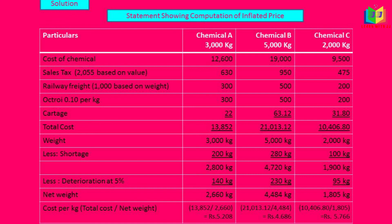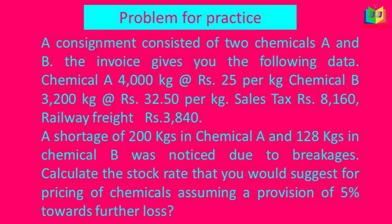Dividing the total cost by the net weight: Chemical A cost per kg = 13,852 / 2,660 = Rs 5.208. Chemical B cost per kg = 21,013.12 / 4,484 = Rs 4.686. Chemical C cost per kg = 10,406.80 / 1,805 = Rs 5.766. The inflated price method thus includes the purchase price plus losses arising from handling, storage, wastage, breakage, and other losses to recover the full material cost.